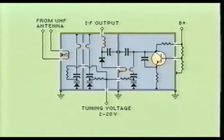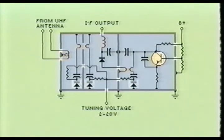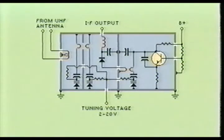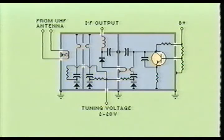Here you see a tuner module utilizing varactor diodes. The RF, mixer, and oscillator sections each have a varactor diode to properly tune each stage. Since all three stages must be tuned at the same time, electrical ganging is used — with no moving tuner parts, mechanical ganging is out of the question. Notice the electrical line connecting the cathodes of each varactor diode, which is used to simultaneously adjust the capacitance in each stage. Since a specific voltage represents the same capacitance to each of the varactor diodes, all three varactors are a matched set.